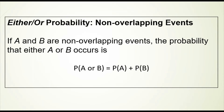The formula for non-overlapping events: if A and B are non-overlapping events, the probability that either A or B occurs is given by: the probability of A or B equals the probability of A plus the probability of B. With and probability, we were multiplying the two probabilities together. With either-or probability, we're adding the two probabilities together.